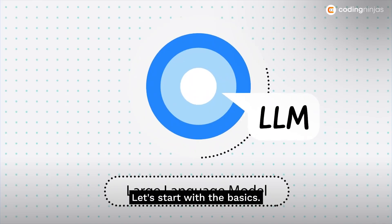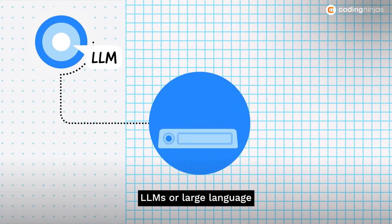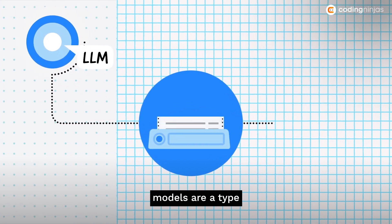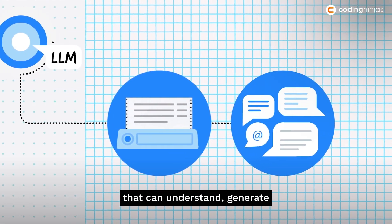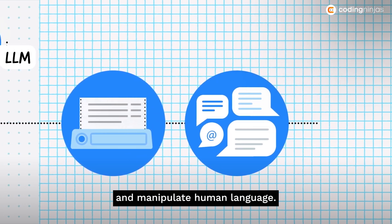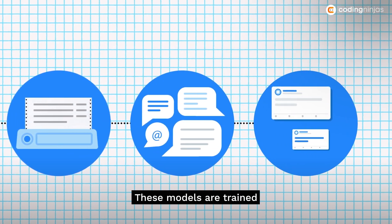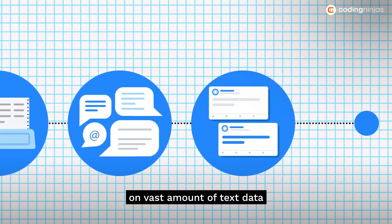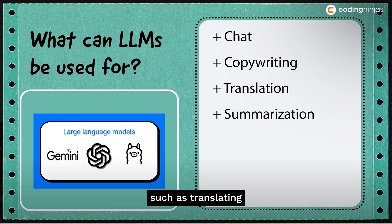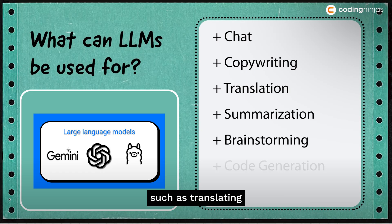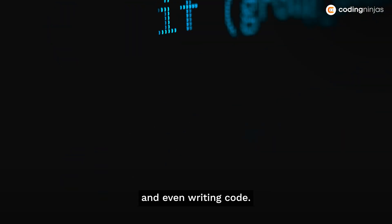Let's start with the basics. LLMs, or large language models, are a type of artificial intelligence that can understand, generate, and manipulate human language. These models are trained on vast amounts of text data and can perform a variety of tasks such as translating languages, summarizing texts, and even writing code.